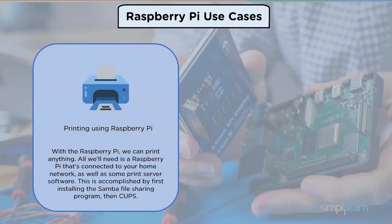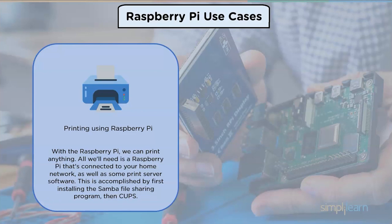For printing using a Raspberry Pi, all you need is a Raspberry Pi connected to your home network along with some print server software. This is accomplished by first installing the Samba file sharing program, then CUPS — which stands for Common Unix Printing System — which includes printer drivers as well as a management console.